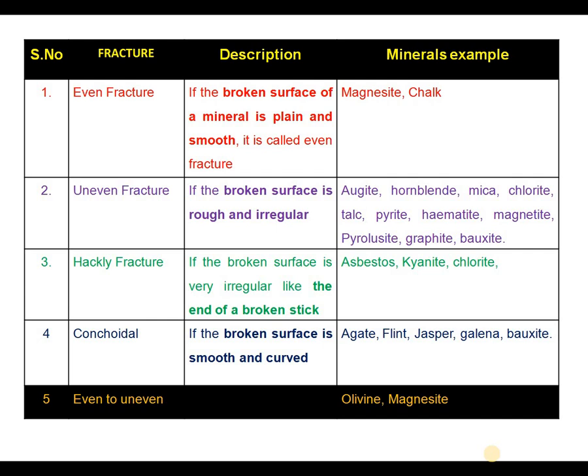Uneven fracture: if the broken surface of a mineral, when we study it, is rough and irregular, in such a case we say that particular mineral is exhibiting uneven fracture. Some of the minerals, especially agate, garnet, mica, chlorite, chalk, pyrite, hematite, magnetite, pyroxene, graphite, and bauxite exhibit uneven fracture.